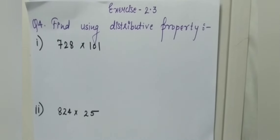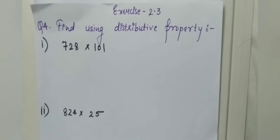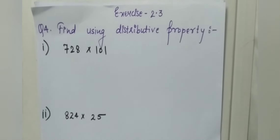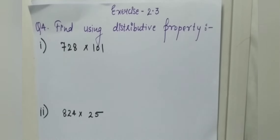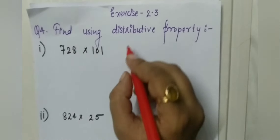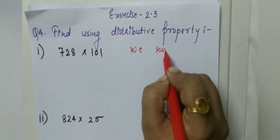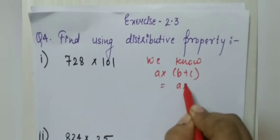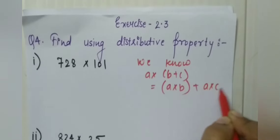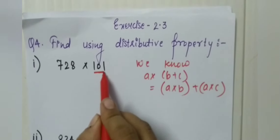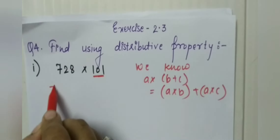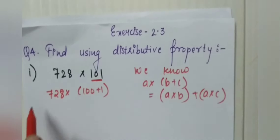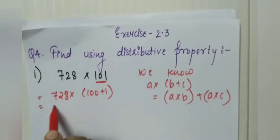Next we'll take Exercise 2.3, Question Number 4 — find using distributive property. We know the distributive property: A into (B plus C) equals A into B plus A into C. Now we have 101 given, so we'll split 101 as 728 into (100 plus 1), which equals 728 into 101.